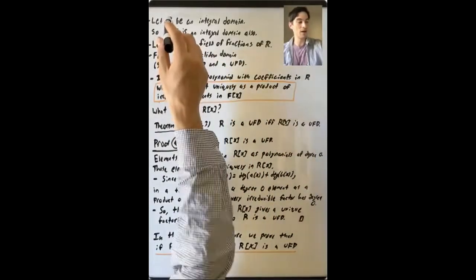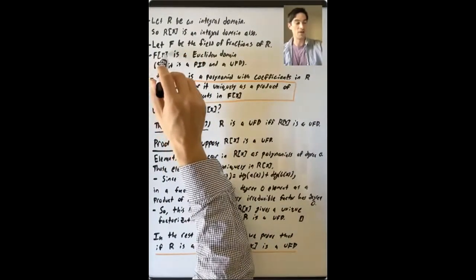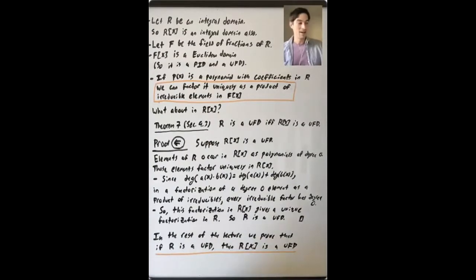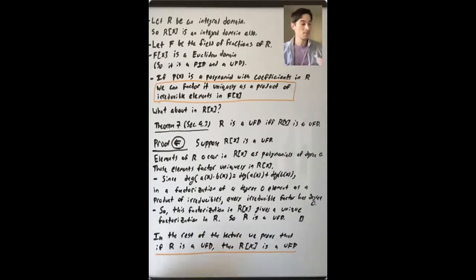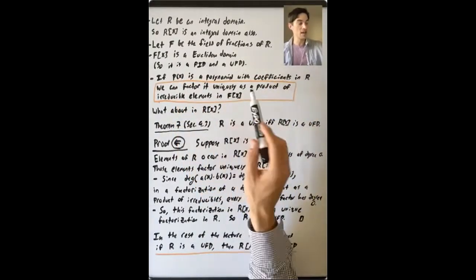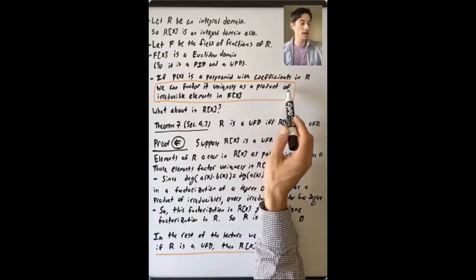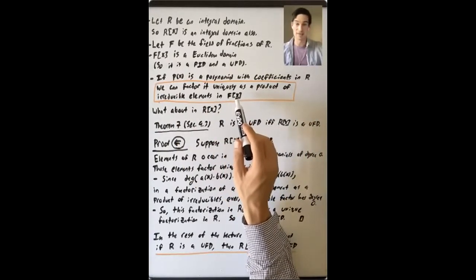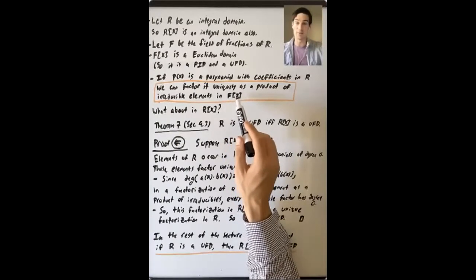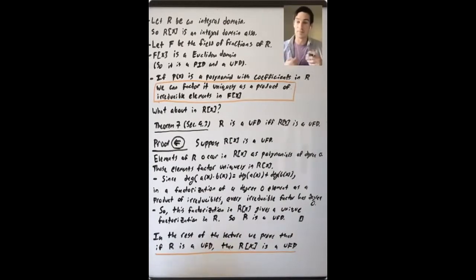So we have this ring R, its field of fractions F, and F[x] is a Euclidean domain. If we have a polynomial P(x) with coefficients in R, we can also think of it as an element of F[x], because R occurs as a subring of its field of fractions. That means we can take P(x), think of it as an element of F[x] — which is a UFD — and factor P(x) uniquely as a product of irreducibles in F[x]. The question is: what can we say about factorizations in R[x]?